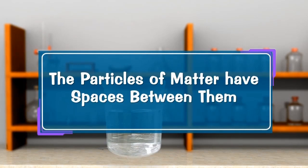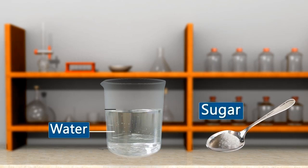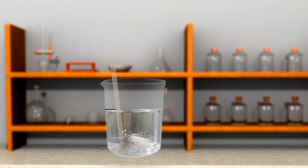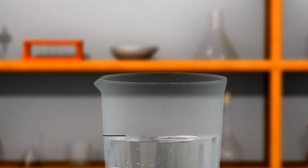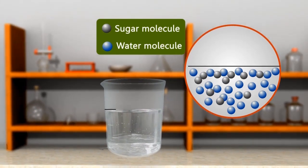The particles of matter have spaces between them. This can be shown by performing the following experiment using water and sugar. We take about 100 ml of water in a beaker and mark the level of water. We add 50 grams of sugar and dissolve it by stirring with a glass rod. When all the sugar has dissolved, we find that the level of sugar solution is at the same mark where the water level was initially. This means that even after dissolving 50 grams of sugar in 100 ml of water, the volume has not increased. This shows that the particles of matter have spaces between them.